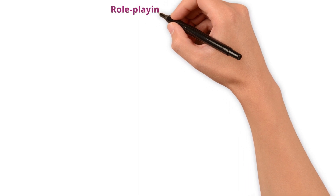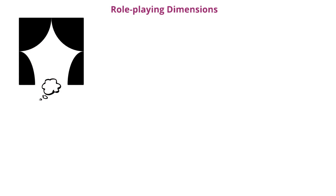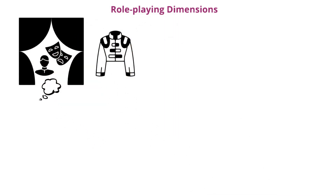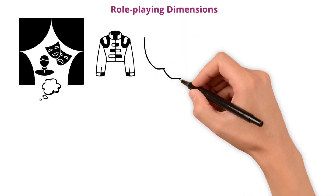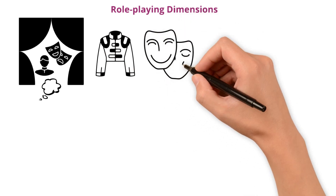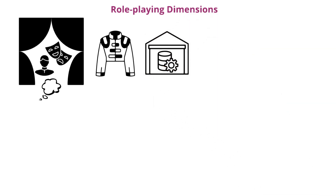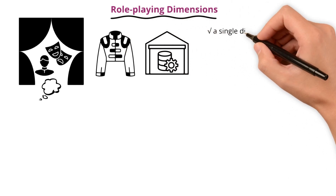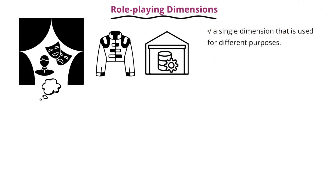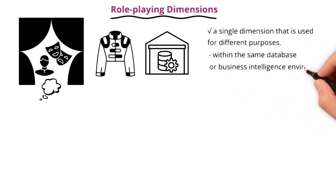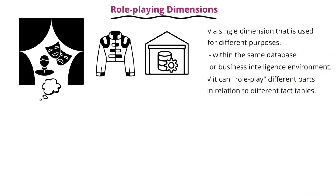Next one: role-playing dimensions. Imagine an actor in a theatre troupe who plays multiple roles in a play, wearing different costumes to portray different characters. The actor is the same, but the context of their appearance changes their role within the story. In the data warehousing world, a role-playing dimension is a single dimension that is used for different purposes within the same database or business intelligence environment. It gets its name because it can role-play different parts in relation to different fact tables.